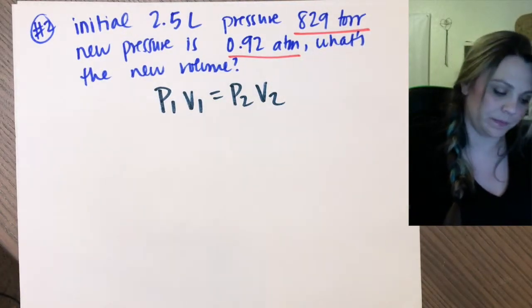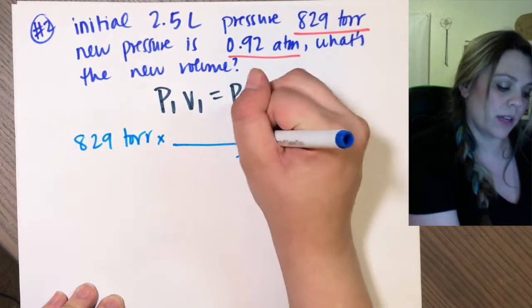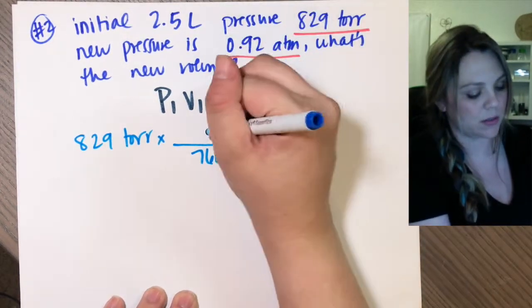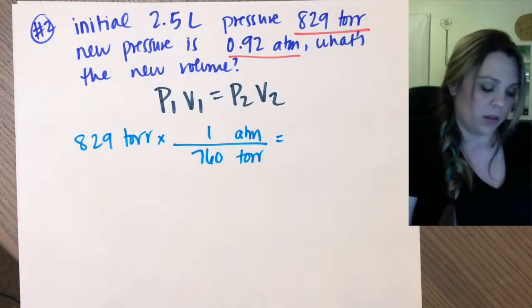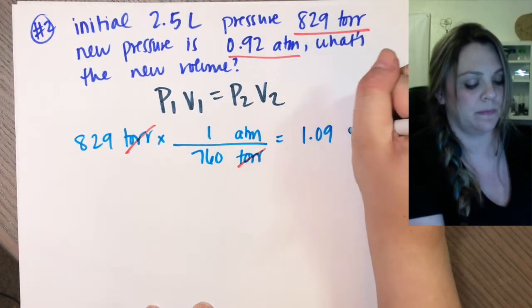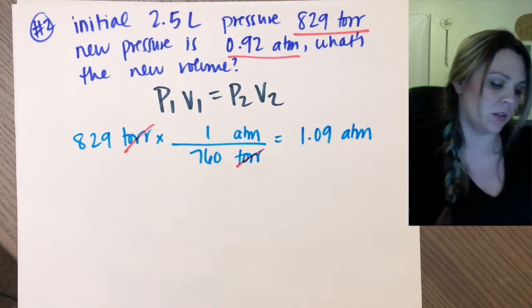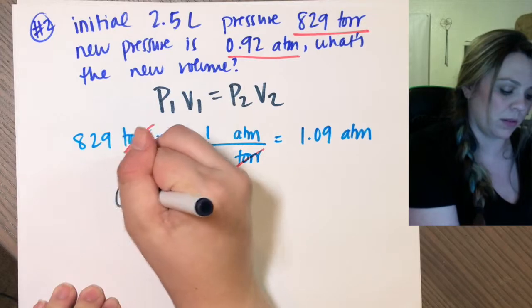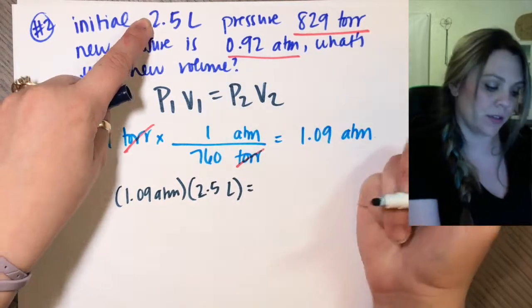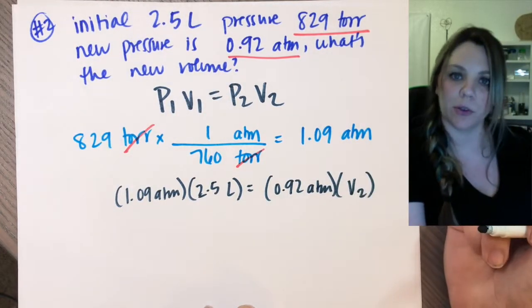And I need to convert. So if I had 829 torr, I need to get out of torr and into atmospheres. You don't have to memorize this conversion. It's on the back of your periodic table. 760 torr is 1 atmosphere. Torr and torr will cancel and I'll get an answer of 1 point something, 1.09. So this is actually my initial pressure that I'm going to use. Now I can plug in. So pressure 1, instead of using 829, I'm going to use 1.09. Volume 1, 2.5 liters. Pressure 2, 0.92. Volume 2, I don't know. That's what I'm solving for.